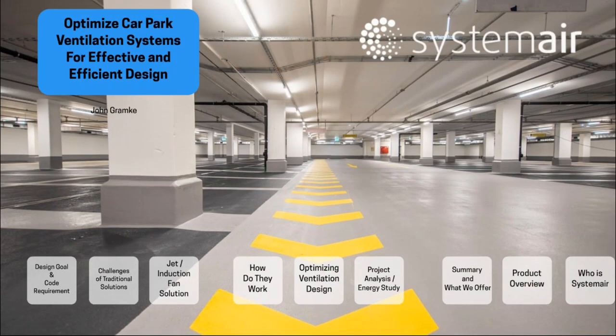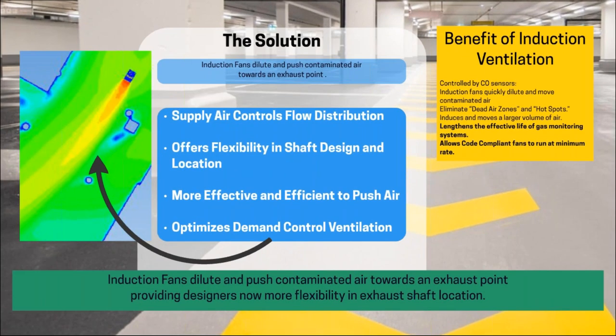What we've recognized as the correct and proper solution are jet fans - whether a high-thrust axial jet fan or a high-induction centrifugal jet fan. Jet fans use the supply air to control the flow distribution, and because you're manipulating the natural airflow path to move where you need it to go to circulate and optimize the ventilation design rate, you have more effective control over that airflow. With more effective control comes greater flexibility in shaft size, shaft design, and shaft location. And from a traditional HVAC standpoint, it's more effective and energy efficient to push your air than to try to pull it.